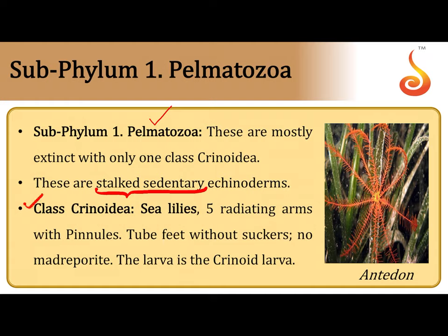In subphylum Pelmatozoa there is a single class referred to as Class Crinoidea. The best examples for Class Crinoidea are sea lilies such as Metacrinus and Bathycrinus, and of course we have the feather star, which can move around, so not all members are fixed to the seafloor. As you can see in the image, they have five radiating arms with leaf-like structures emerging from the main axis of each arm.